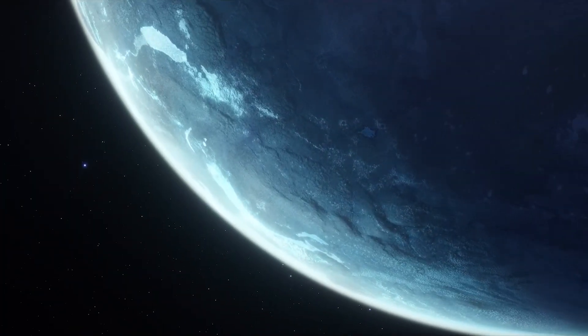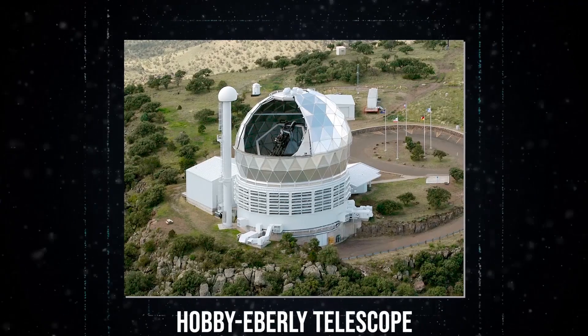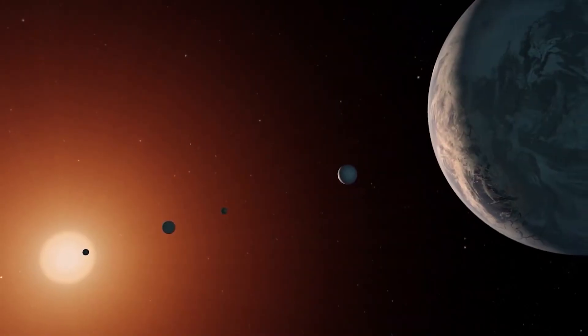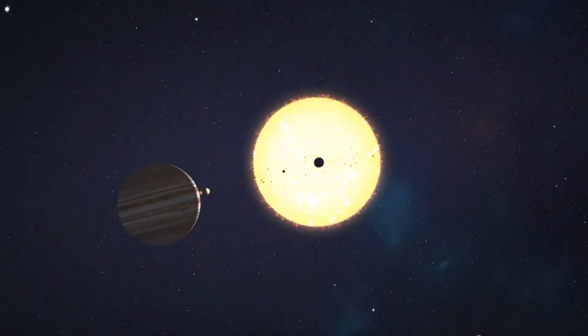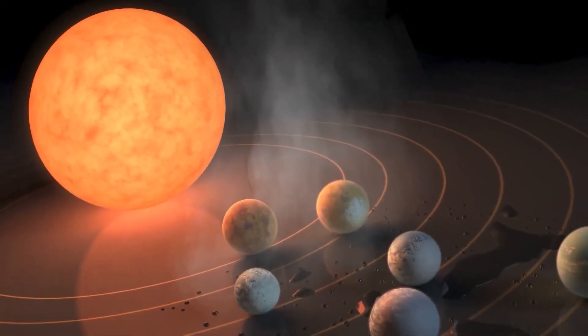Data collected from the Habitable Zone Planet Finder on the 10-meter Hobby-Eberly Telescope at the University of Texas at Austin's McDonald Observatory is already hinting at the presence of more planets like it. Could there be a whole new class of planets waiting to be discovered?